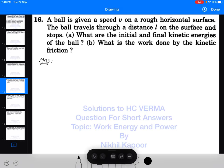Let's start with the 16th question. A ball is given a speed v. If this is the ball, and this particular ball is given a speed v initially on a rough horizontal surface,